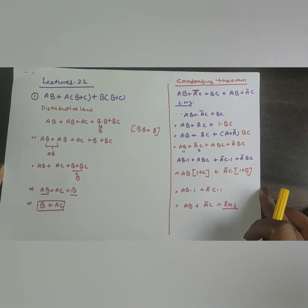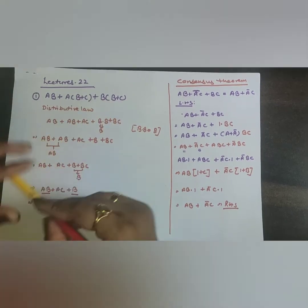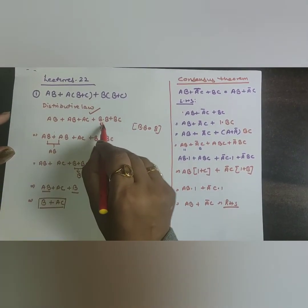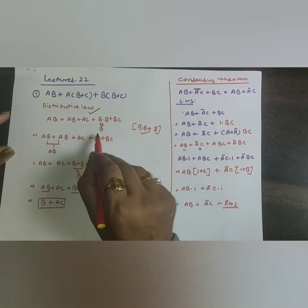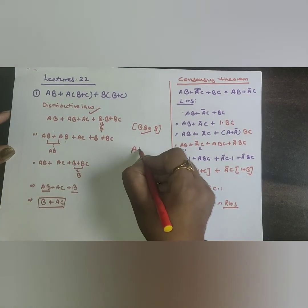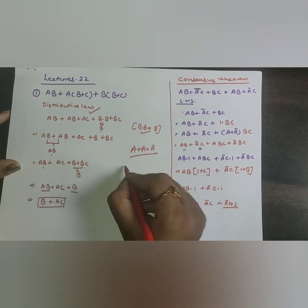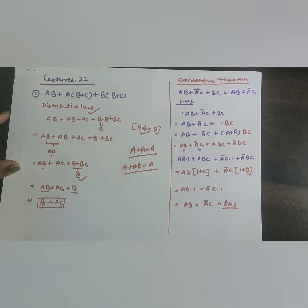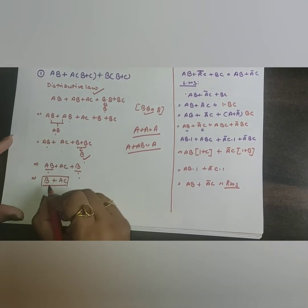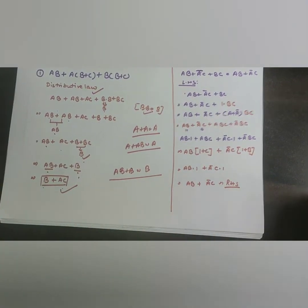Example 3: Simplify AB + A(B+C) + B(B+C). Expanding by distributive law: AB + AB + AC + B·B + BC. Since B·B = B, we have AB + AB + AC + B + BC. AB+AB = AB by the OR law (A+A=A). Then A + AB simplifies to A, so we get AB + AC + B. Finally, B + AB = B, giving B + AC as the answer.